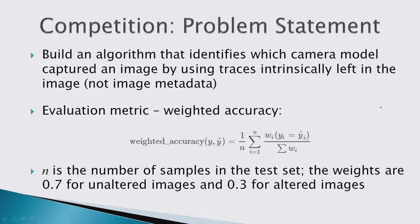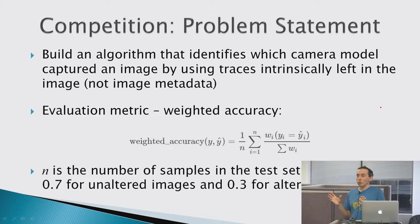An audience member asked: what are these traces left in the image — are they related to how pixels are organized? Yes, because different cameras use different sensors and different lenses, so those images are in some way different. It was up to competitors to figure out exactly how they were different and how to recognize if an image belonged to a certain camera.